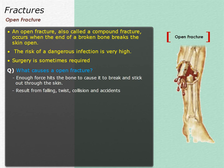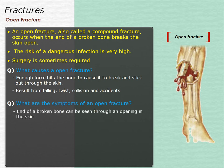Twists, collisions, and accidents such as car crashes may cause these fractures too. The sign of an open fracture is when the end of a broken bone can be seen through an opening in the skin. Other symptoms include swelling and pain. You may also see bruises from bleeding inside the body. Trying to move the affected part or putting weight on it is very painful.